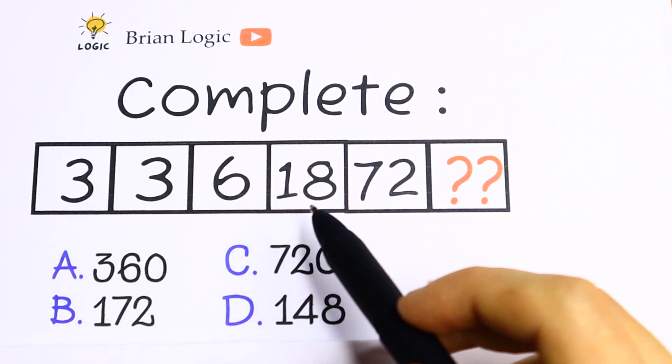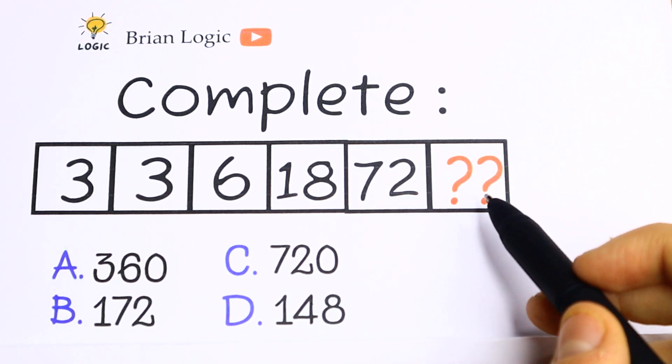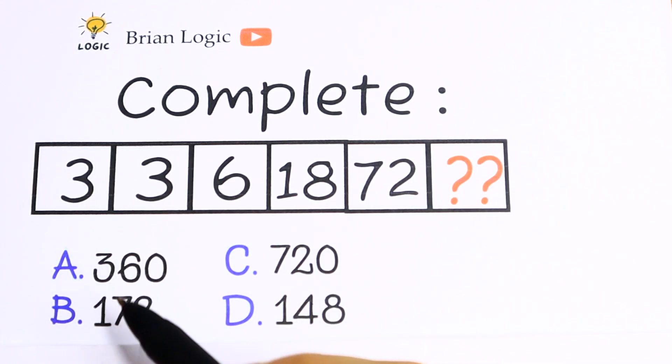So we have 3, 3, 6, 18, and 72, and we need to find the last number. Right here we have options A, B, C, and D.